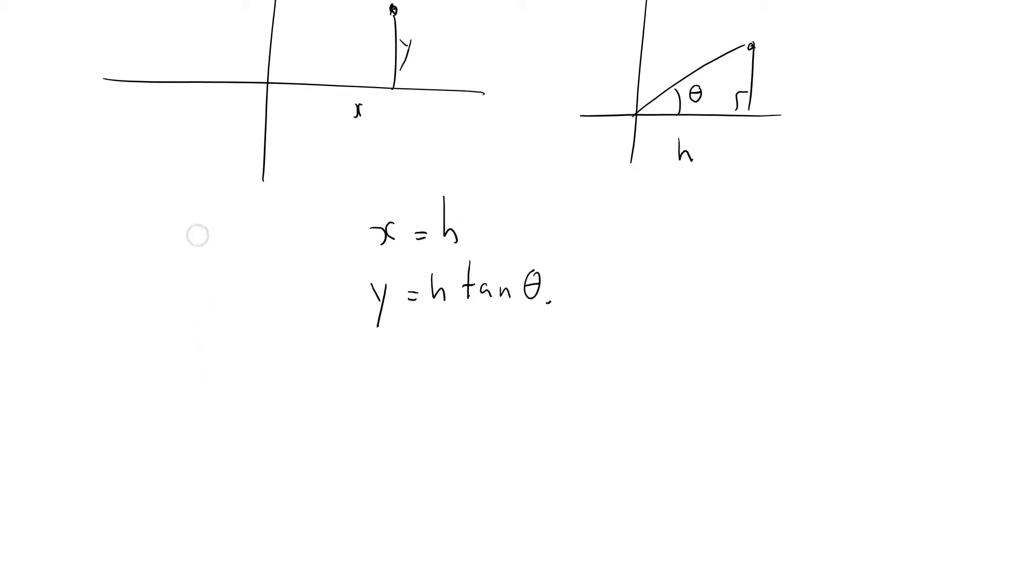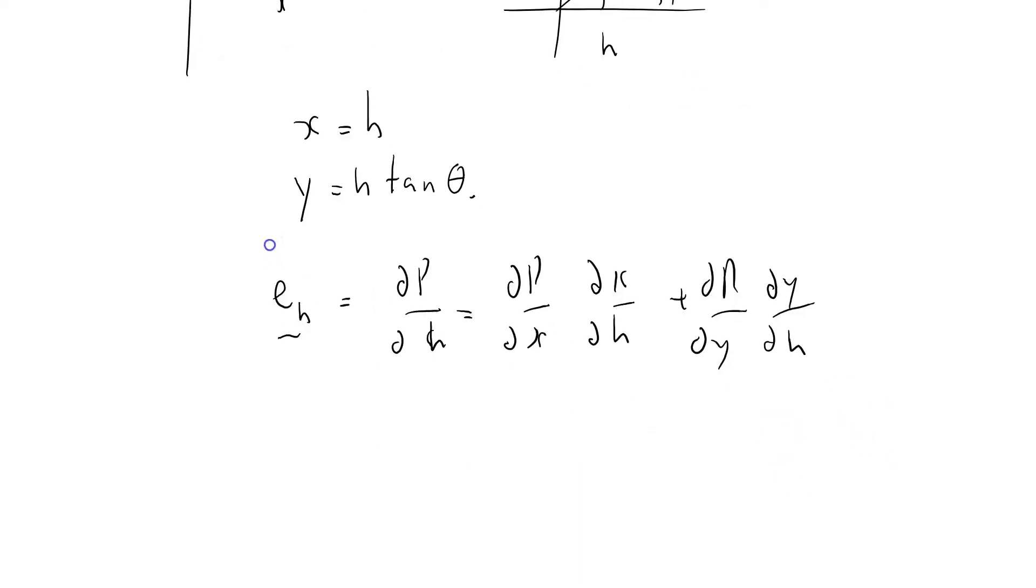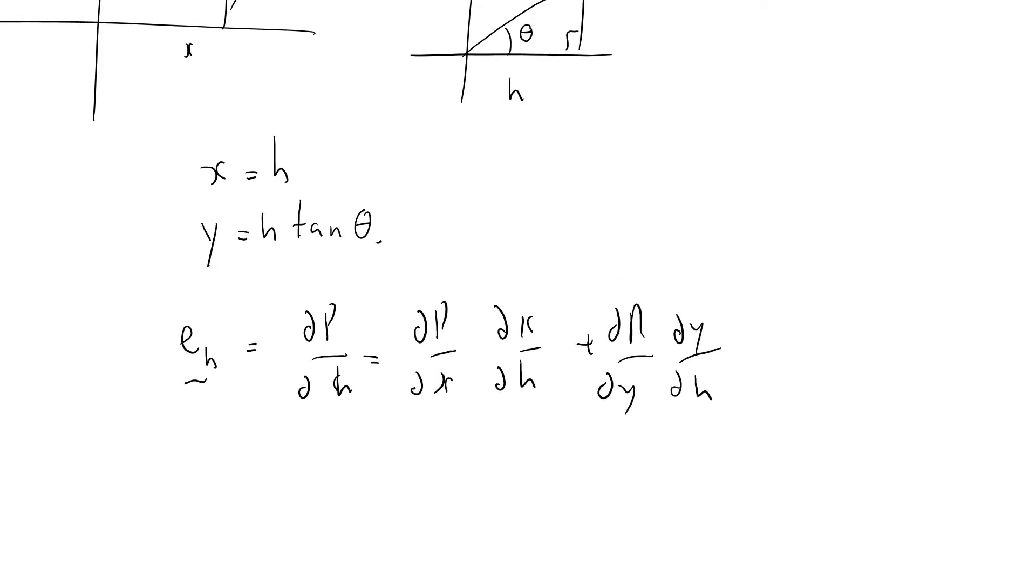I've been defining my basis vectors in terms of e_h equals ∂ρ/∂h = (∂ρ/∂x)(∂x/∂h) + (∂ρ/∂y)(∂y/∂h). It's as well to do this each time. ∂ρ/∂x is e_x by definition, times dx/dh which is just 1, plus ∂ρ/∂y is e_y times dy/dh, which is just tan theta.